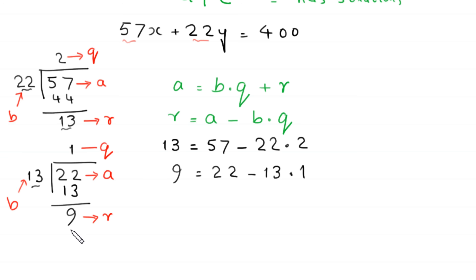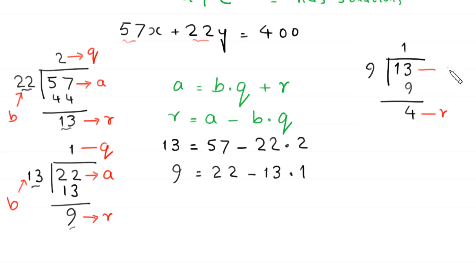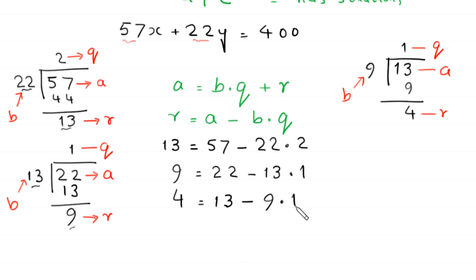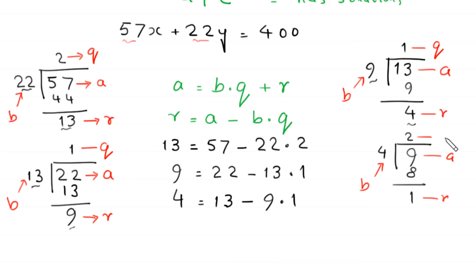Now we divide 13 by 9: 13 divided by 9 gives 9 one time, and we get remainder 4. In this case, r=4, a=13, b=9, and quotient q=1. So we write: 4 = 13 minus 9 times 1. Now we divide 9 by 4: 9 divided by 4 gives 4 two times making 8, and we get remainder 1. So remainder r=1, a=9, b=4, and quotient q=2. We write: 1 = 9 minus 4 times 2.